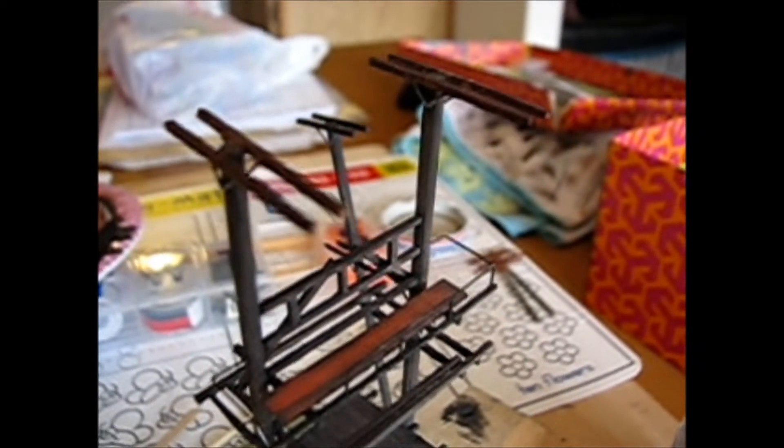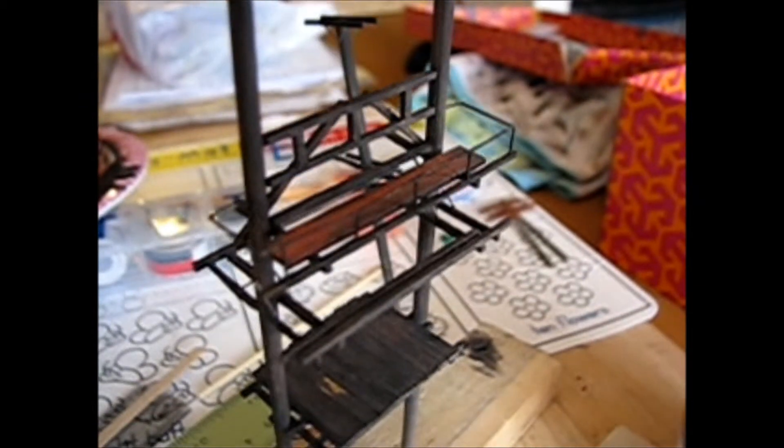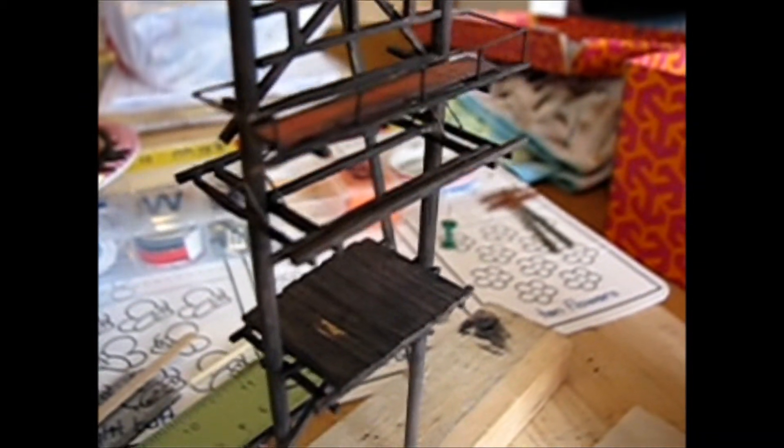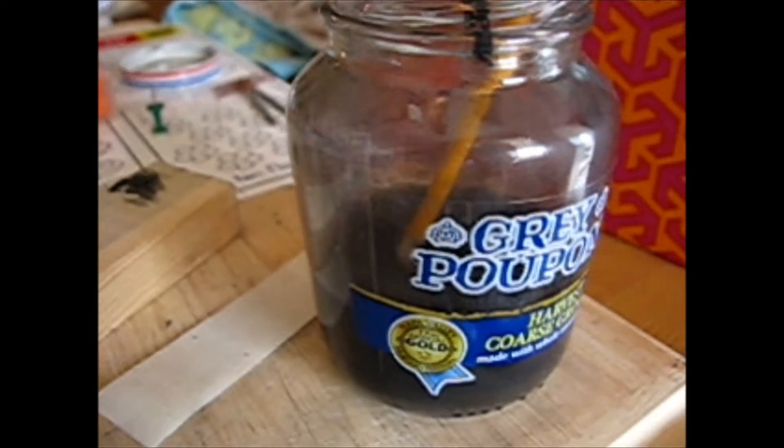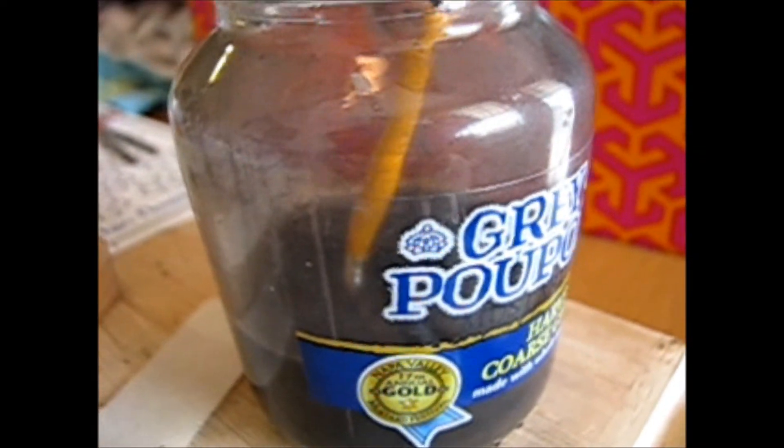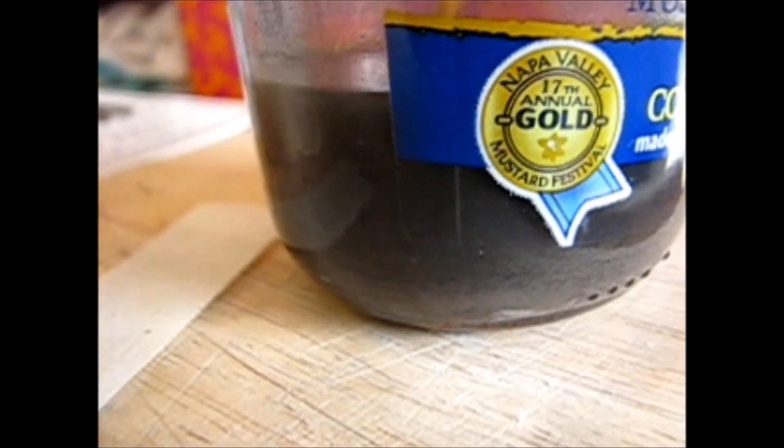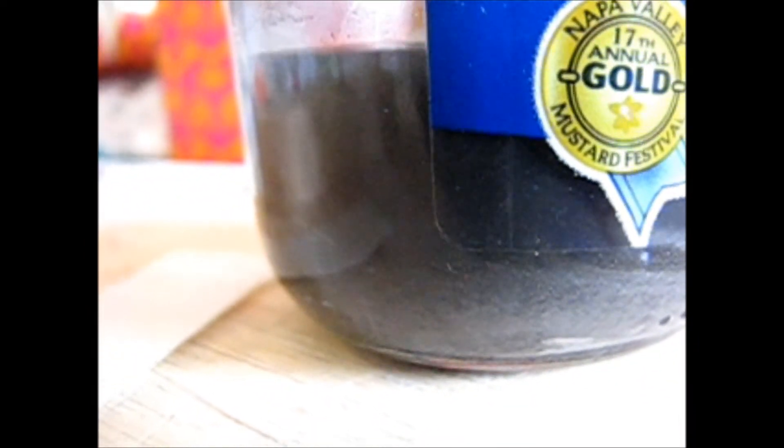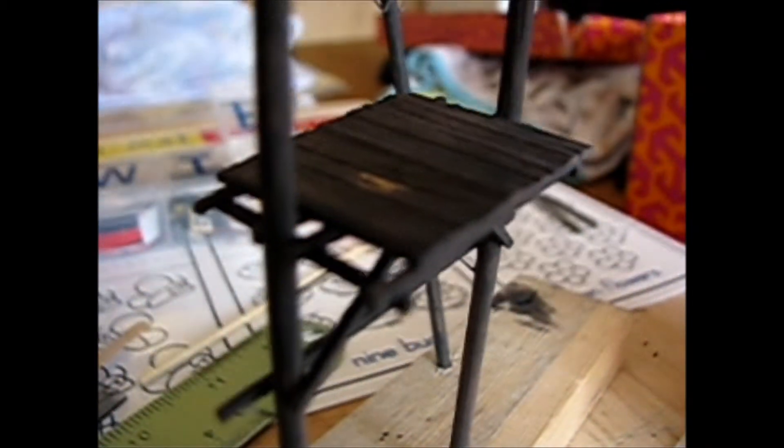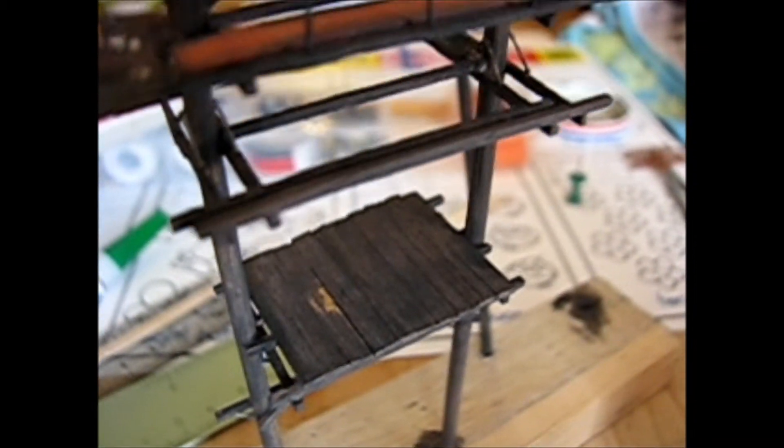And once all the glue has dried, I go ahead and I give this a final wash of the India ink alcohol. And I keep that mixture over here. I clean all my brushes in it. So it's really just a whole dirty mess of India ink, paint, and alcohol. And then I'll just brush that on and that kind of just stresses out the wood a bit and gives it that dirty, dried out appearance.